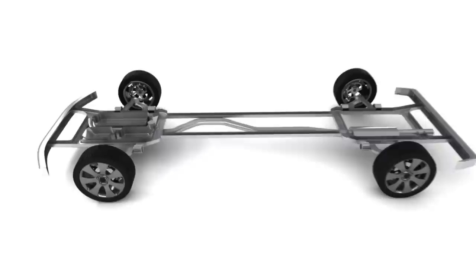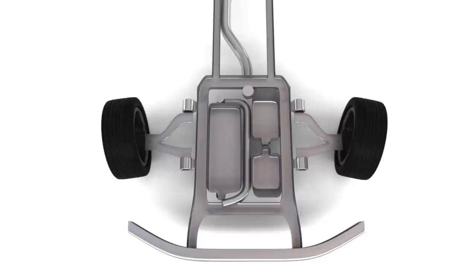Toe-in and toe-out are terms that describe the angular relationship of a vehicle's tires. If the tires point slightly inward, they are said to be in a toe-in position. Pointing outwards, they are toe-out.